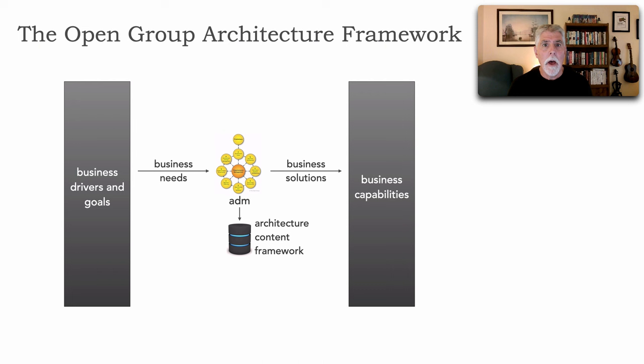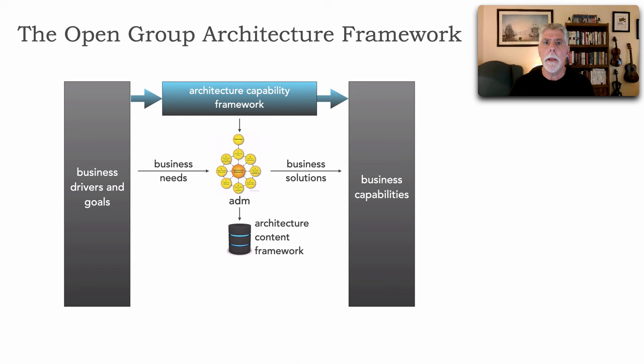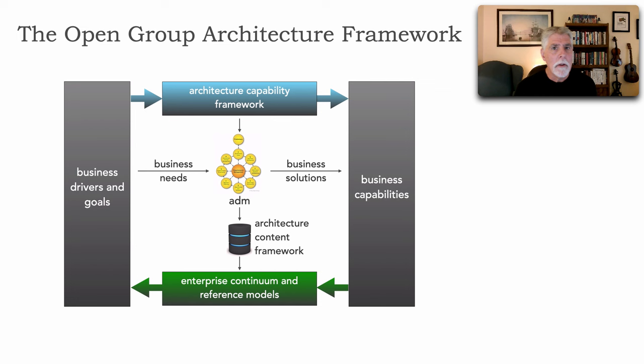During this process, we create and reuse artifacts, reusable assets, and building blocks that form what's called an Architecture Content Framework. Then we have two other components within TOGAF: the Architecture Capability Framework, which manages a lot of the project management aspects of a particular initiative, and the Enterprise Continuum and all the reference models, which continually create a feedback loop to ensure that what we did was accurate and correct.